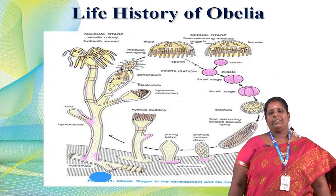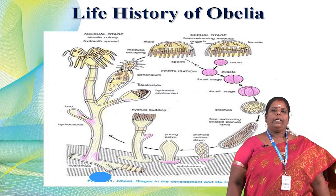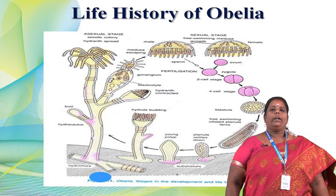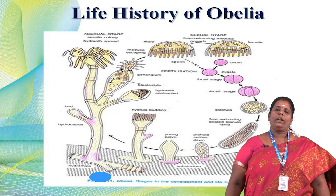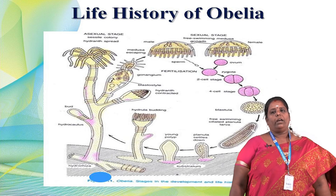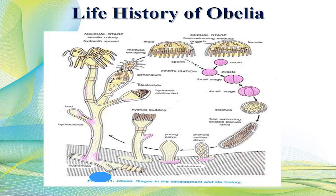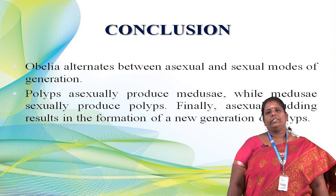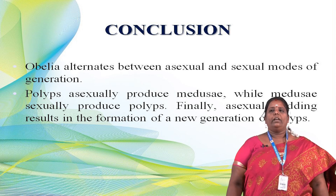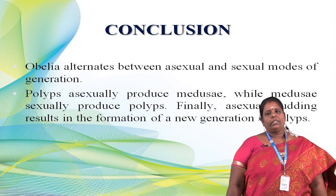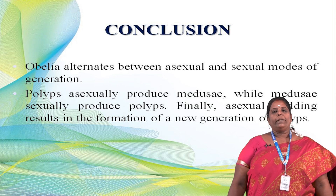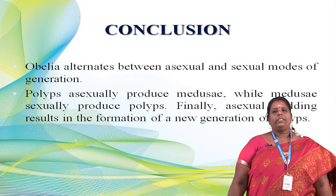The planula attaches to a substratum and develops into a young polyp. The young polyp develops into the hydranth larva, and the hydranth develops into the fully matured Obelia colony. The fully matured Obelia colony undergoes budding and forms hydrorhiza, producing both sexual and asexual colonies. In conclusion, Obelia alternates between asexual and sexual modes of generation — the polyp asexually produces medusae, while medusae sexually produce polyps, with asexual budding resulting in new generations. Thank you.